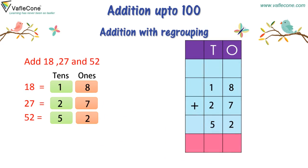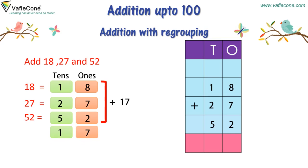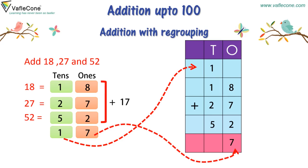Addition with regrouping. Addition of 3 numbers works in a similar way. When we add 8 plus 7 plus 2, the answer is 17, or 1 ten and 7 ones. So we place 1 at the tens place and 7 at the ones place. Now, adding numbers at the tens place: 1 plus 1 plus 2 plus 5 is equal to 9. Therefore, the answer is 97.